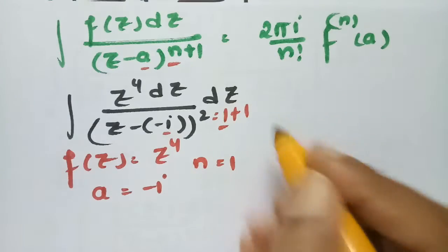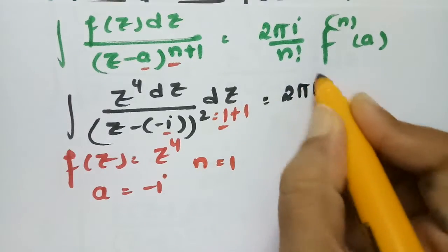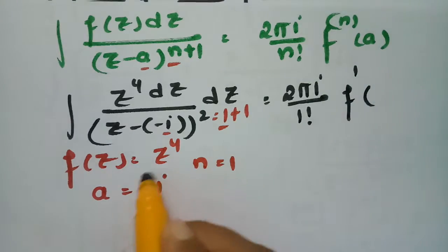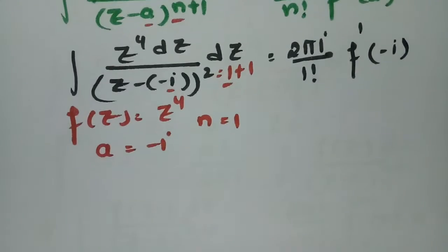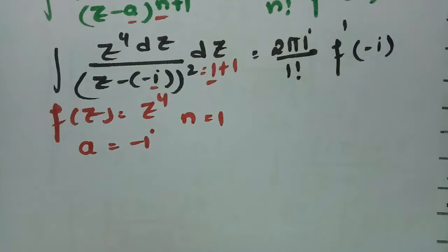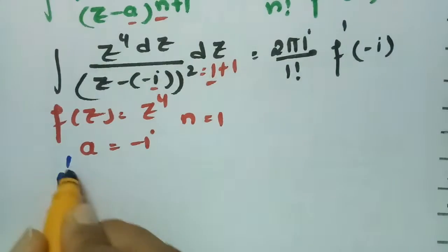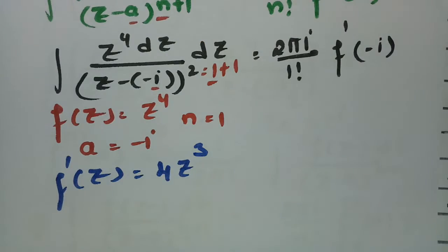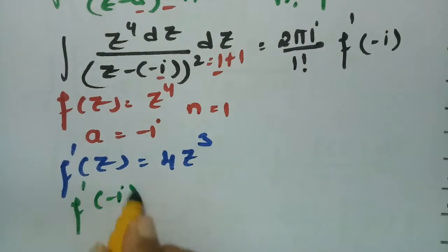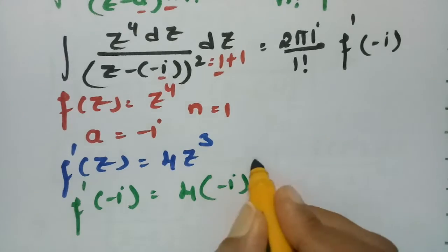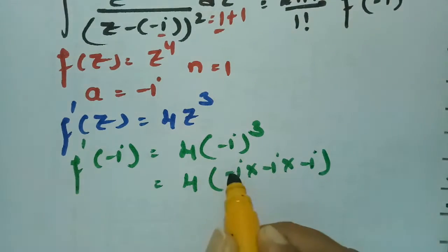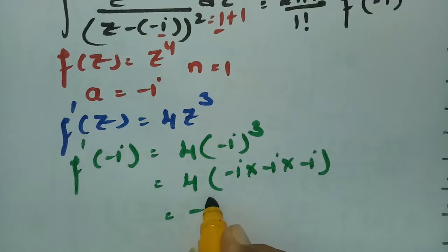Substituting gives (2πi / 1!) · f'(−i). The first derivative f'(z) = 4z³. Evaluating at z = −i: f'(−i) = 4(−i)³ = 4·(−i·−i·−i). Since i² = −1, (−i)³ = −(i³) = i, so f'(−i) = 4i.